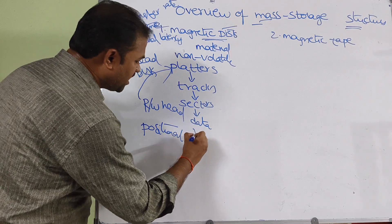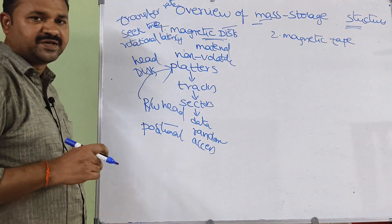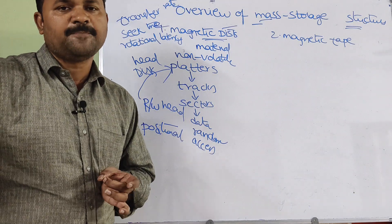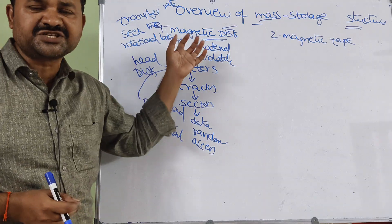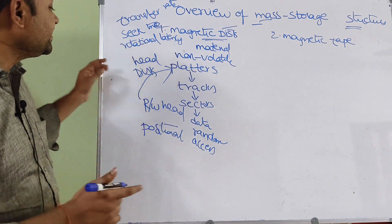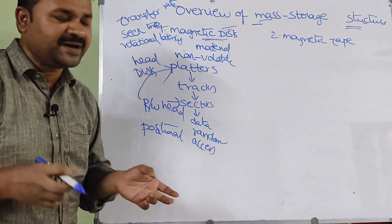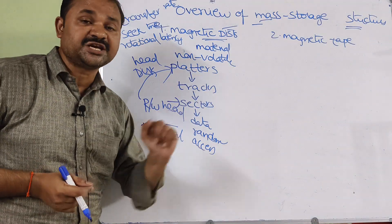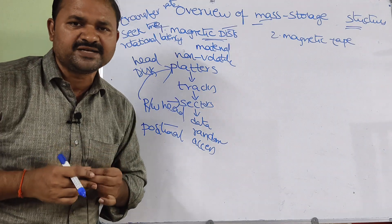Seek time can also be called positional time or random access time. Rotational latency is the time taken by the read/write head to reach the appropriate sector. Seek time refers to reaching the appropriate track. With the help of these three parameters — transfer rate, seek time, and rotational latency — we can analyze the performance of the hard disk.